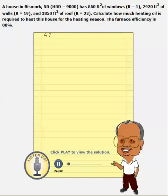The house is located in Bismarck, North Dakota, and HDD there is given as 9,000. This HDD remains the same for all different surfaces.